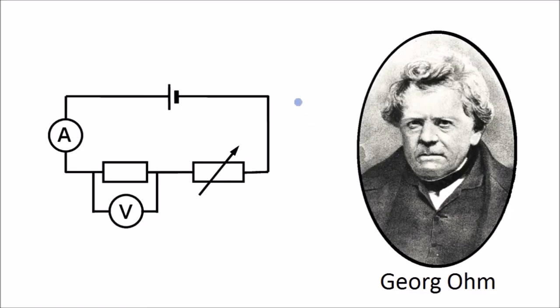You can do a similar experiment to what he did. All you need is a circuit like this. This is a variable resistor, and you use it to change the current that flows in the circuit - the current that flows through this fixed resistor.